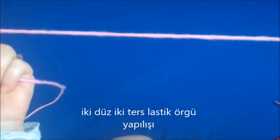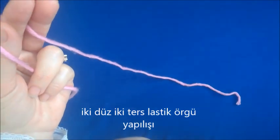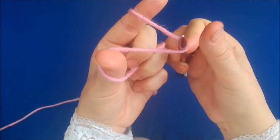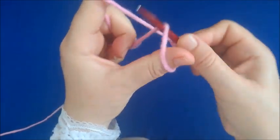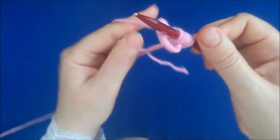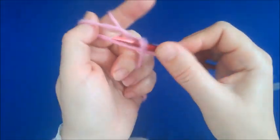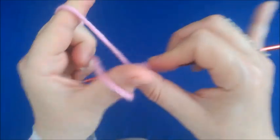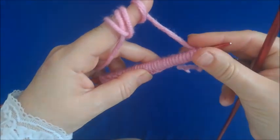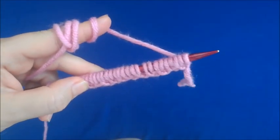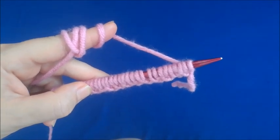Farklı bir ip aldım, biraz daha kalın, daha net gözükmesi açısından. Altı numarada şiş var elimde. Videonun başında anlattığımız ilmek atışımızı yapıyoruz. Yine tutuyoruz bir dış bir iç olarak, ilmeğimizi atıyoruz. Lastikte oluşan dişlerin daha net gözükmesi için kalın ip tercih ediyorum şu an. İki düz iki terste ilmek sayımızın çift olması gerekiyor. Ve neye dikkat etmemiz gerekiyor: İlk iki ilmeğimiz düz alındıysa, sıranın sonundaki son iki ilmeğin ters olması gerekiyor.